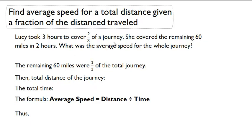Find the average speed for a total distance given a fraction of the distance traveled. Lucy took three hours to cover two-thirds of a journey. She covered the remaining 60 miles in two hours. What was the average speed for the whole journey?